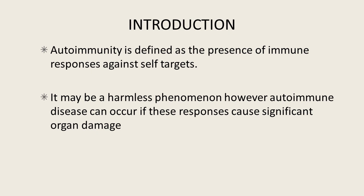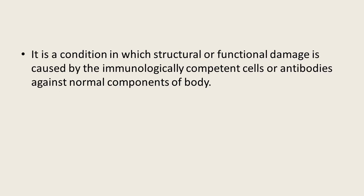Examples of autoimmune diseases include type 1 diabetes mellitus, autoimmune thyroiditis, Sjögren's syndrome, SLE, and multiple sclerosis. Circulating antibodies can often be detected in vitro by tests that demonstrate antibody binding to appropriate human tissue surfaces. It is a condition in which structural or functional damage is caused by immunologically competent cells or autoantibodies against normal components of the body.